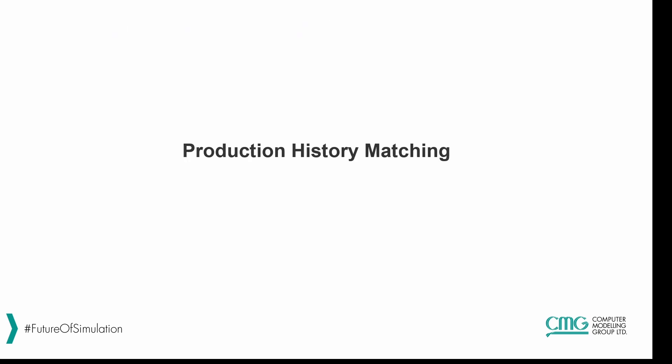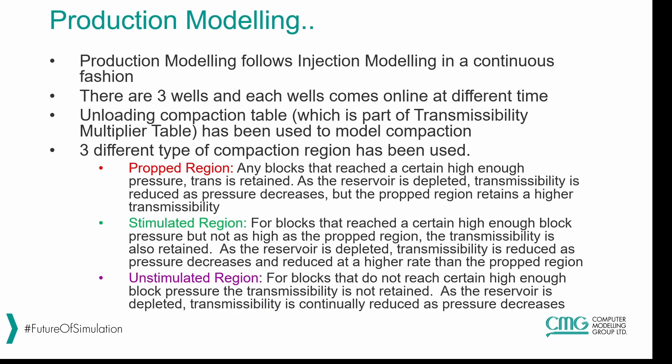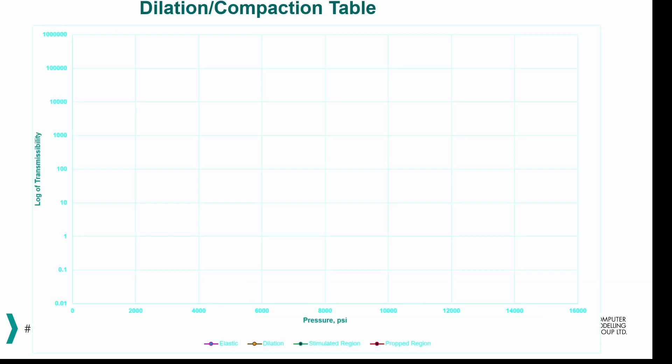Now let's talk about the production history matching. The production modeling follows the injection modeling in a continuous fashion, and as we saw there are three wells, each coming online at a different time. The unloading compaction tables are used to model the production period. There are three curves: the propped region, the stimulated region, and the unstimulated region.